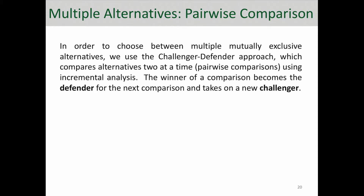Hello everyone, and thanks for joining me. In this video we're going to talk about incremental IRR analysis when you have multiple alternatives — more than two, say five or six investment options — and you want to pick the best one using IRR analysis. The idea is that we order these alternatives from the smallest initial investment to the highest, and compare them two at a time. This is called pairwise comparison.